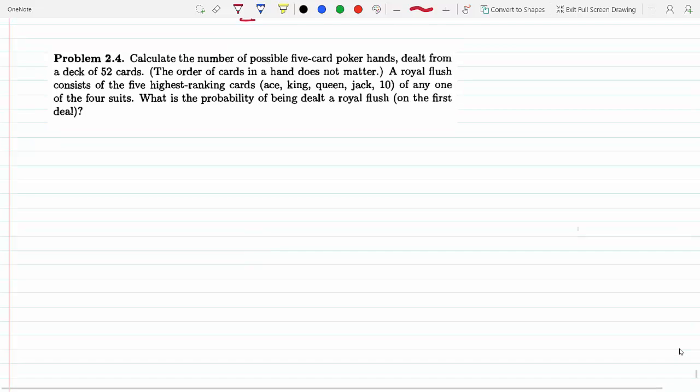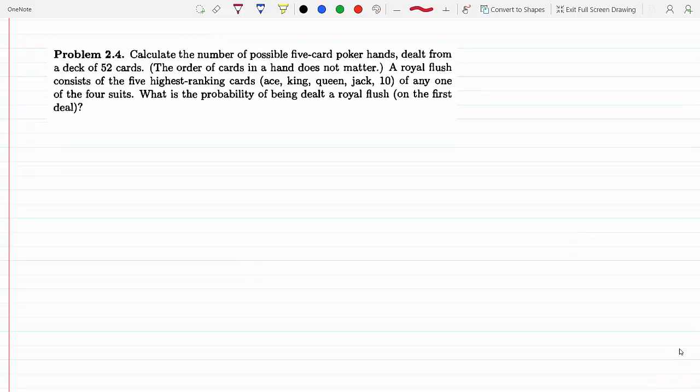Calculate the number of possible five-card poker hands dealt from a deck of 52 cards. We could use the multiplicity formula that I derived in a different video. If you're interested to see how we arrived at that formula, watch my video on combinatorics. Here I'm just going to use it.